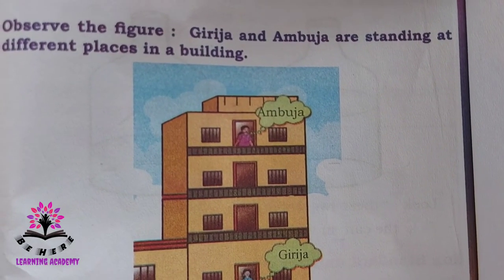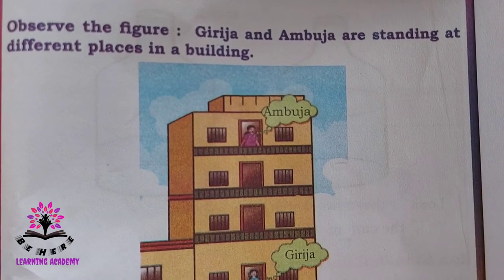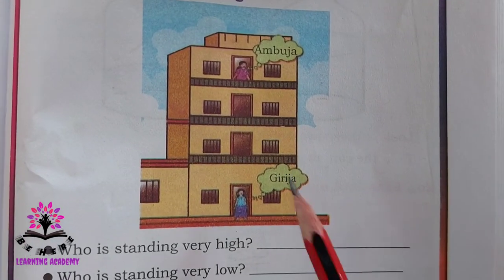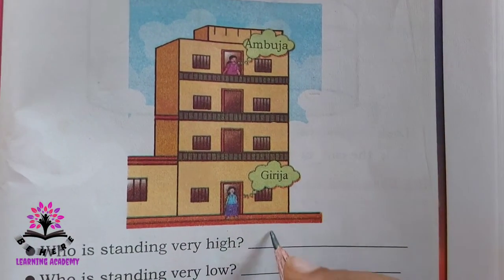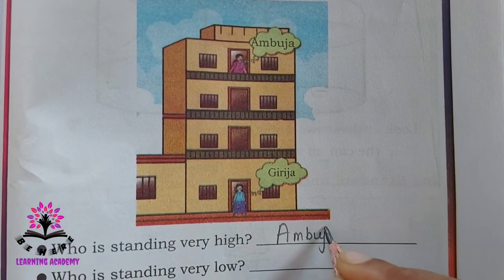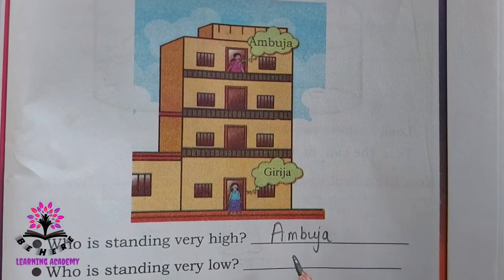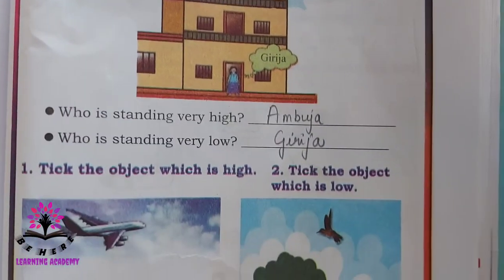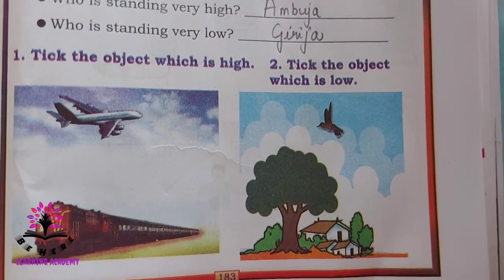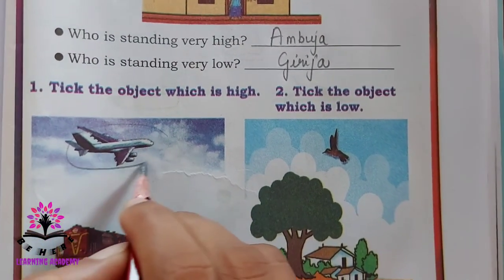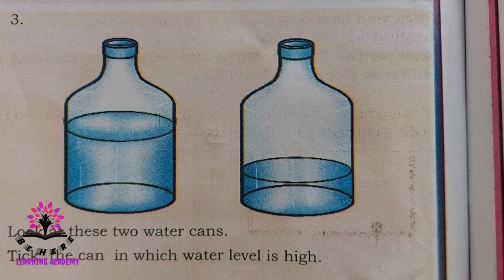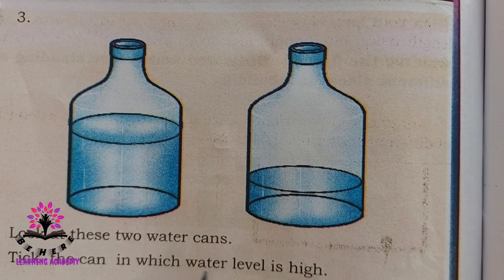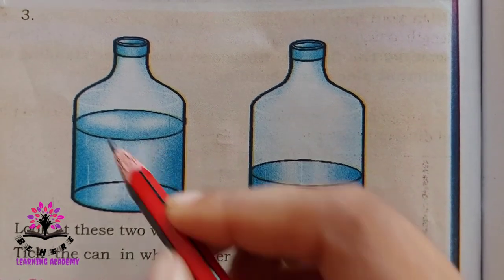Observe the figure. Girija and Ambuja are standing at different places in a building. Who is standing very high? Ambuja is standing very high. Who is standing very low? Girija is standing very low. Which object is high? An aeroplane. Look at these water cans — there are two water cans. Tick the can in which the water level is high — this one.